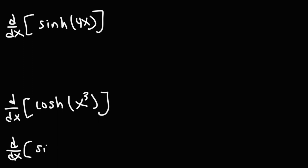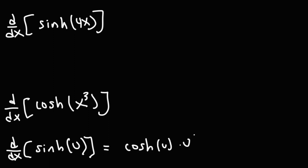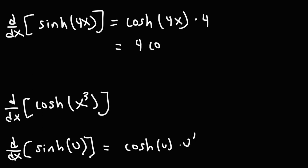The derivative of hyperbolic sine of u, where u is a function of x, is hyperbolic cosine of u times u prime. So for sinh(4x), this is hyperbolic cosine of 4x times the derivative of 4x, which is 4. So the answer is 4 hyperbolic cosine of 4x.